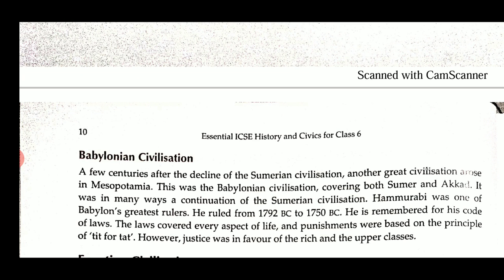Now, Babylonian civilization. A few centuries after the decline of Sumerian civilization, another great civilization arose in Mesopotamia. In Mesopotamia there were two civilizations: the Sumerian civilization and the Babylonian civilization. The Babylonian civilization covered both Sumer and Akkad, and was in many ways a continuation of Sumerian civilization.